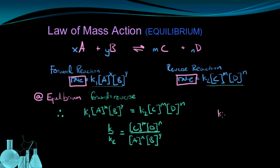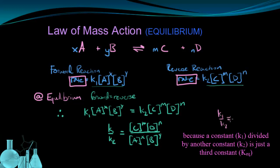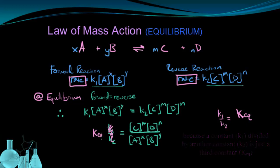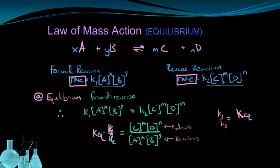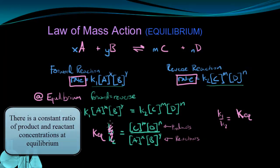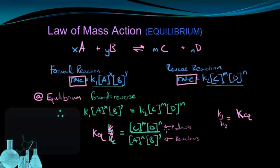We replace K1 over K2 with a capital K called KEQ — the equilibrium constant. Looking at the right side of the equation, we can see that this is a ratio between products on top and reactants on the bottom. The fact that KEQ is a constant means there is a constant ratio between products and reactants at equilibrium, and that's going to be a really powerful idea.